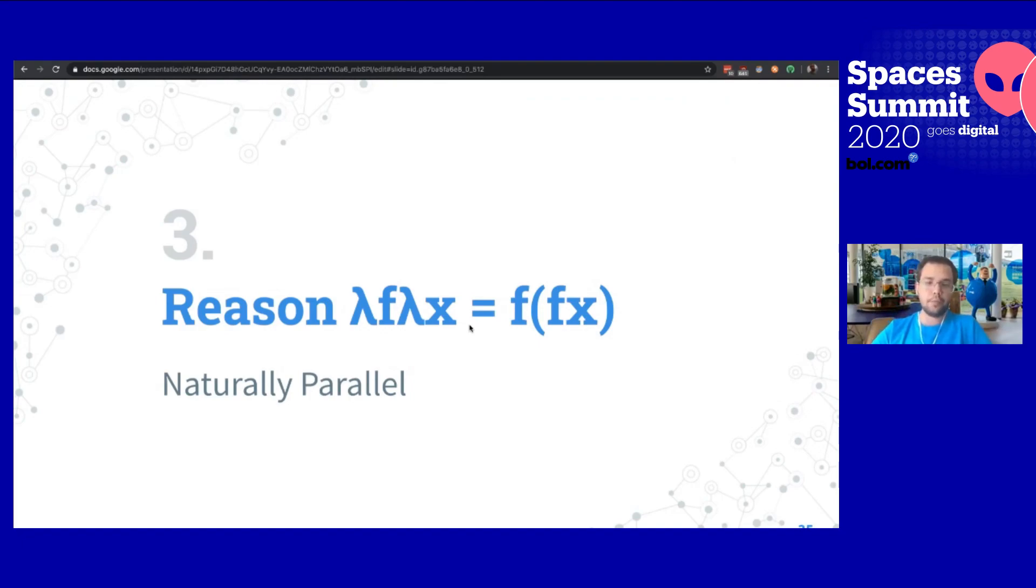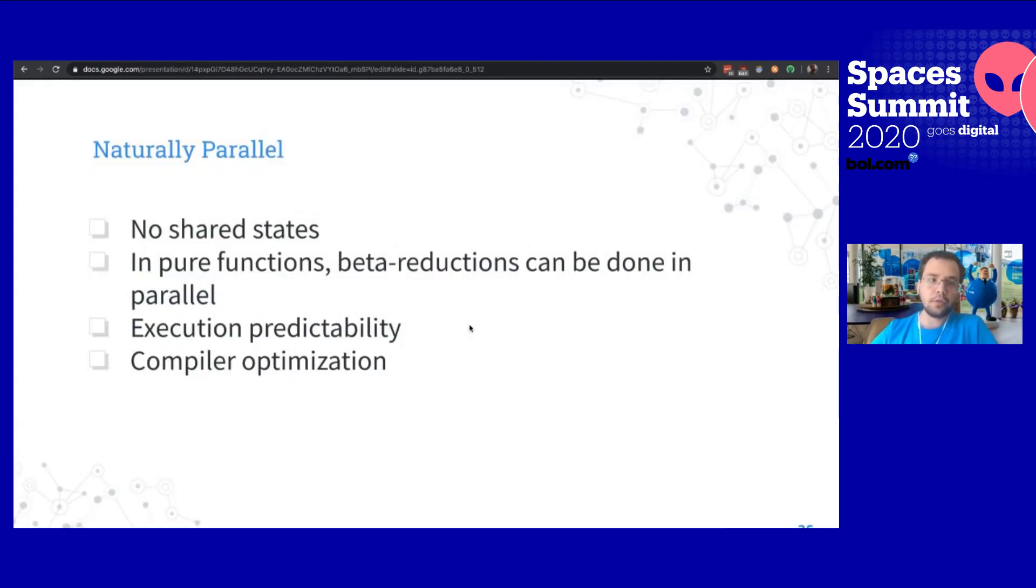Reason number two. It's naturally parallel. And what does it mean? It has no shared states. In pure functions, beta reductions can be done in parallel. What's beta reductions? It's the way that the compiler executes the function. It has execution predictability and compiler optimization. So what this means? Languages like Erlang, Elixir, Haskell, you don't have to define a parallel execution for a list comprehension or like events listener. The compiler knows that it can be parallel. It can be parallel because there is no mutability. There's no side effects. So you don't have to like you do in Java. I want to create a filter and a thread for that and control the threads. The compiler will do that for you. And that's a huge gain.